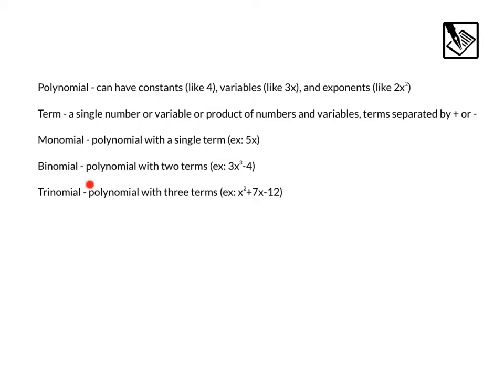A binomial is a polynomial with two terms, for example, 3x to the third power minus 4. And a trinomial is a polynomial with three terms, example, x squared plus 7x minus 12.